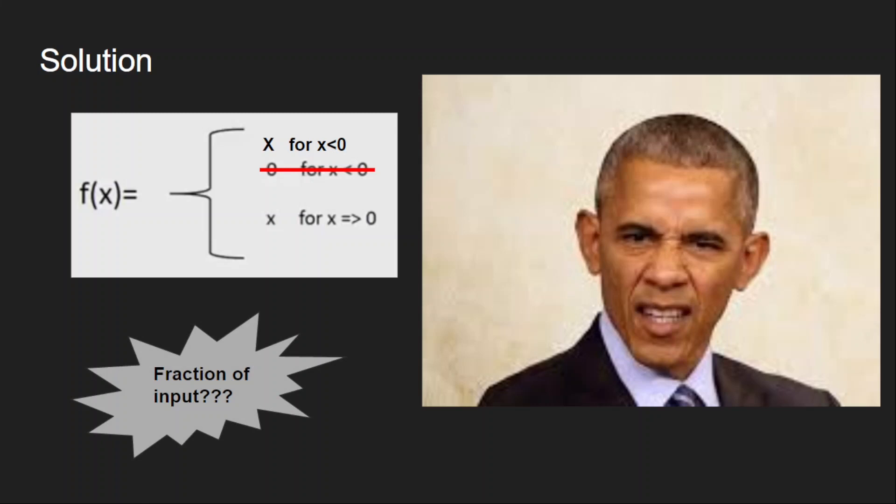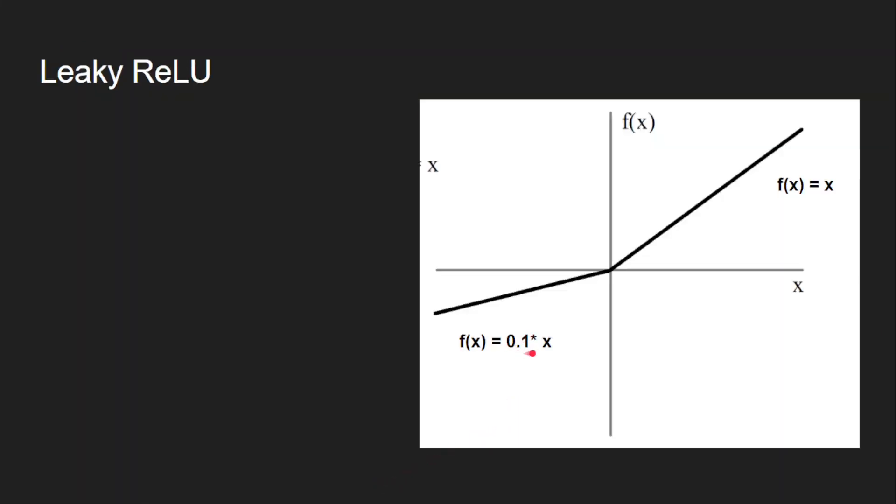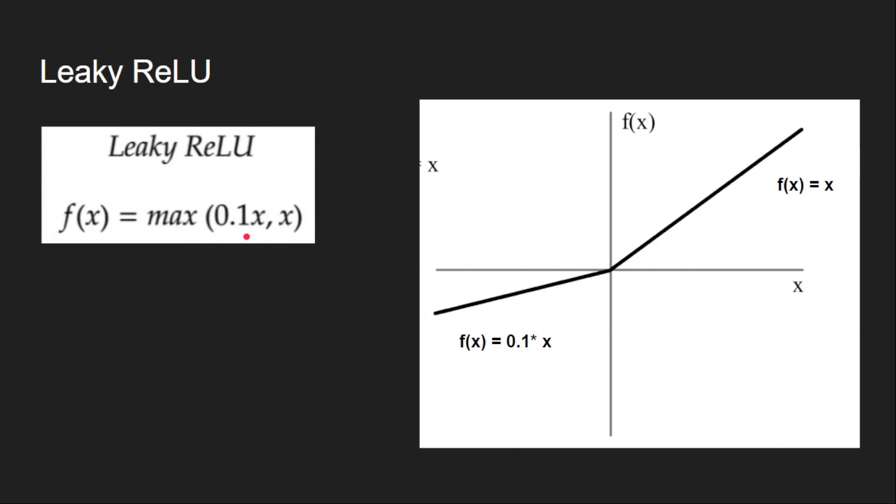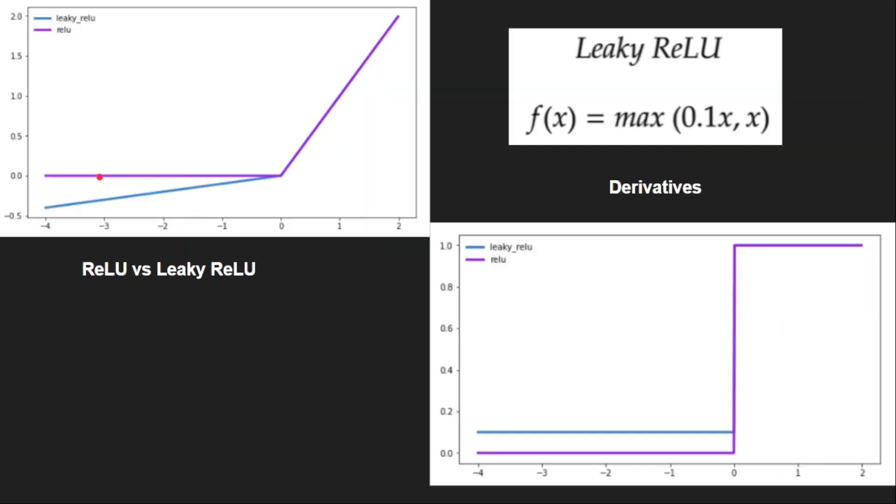That's what leaky ReLU is. It takes 10 percent of the input if it is in the negative range. The positive part remains same as ReLU. For implementation, it is quite simple. Just take the maximum of fraction of input versus input. This is similar to ReLU except the negative part. You can see the difference here.